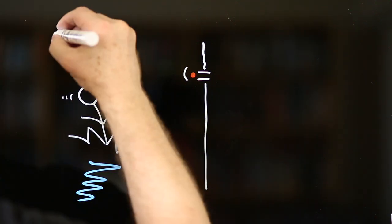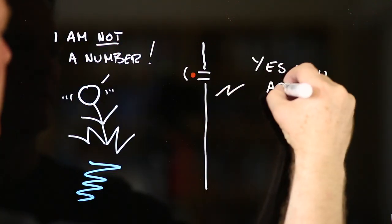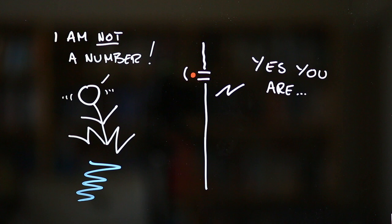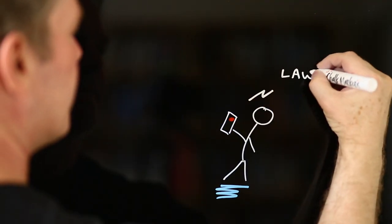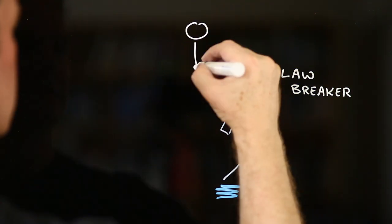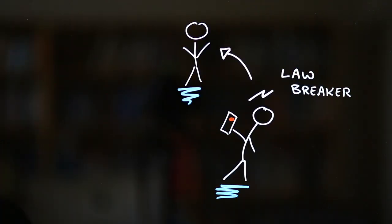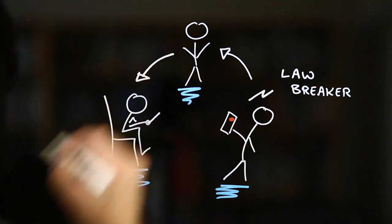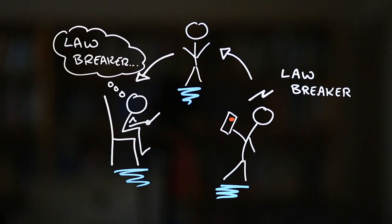But what happens when bias becomes a feature rather than a flaw? Imagine for instance an app that claims to be able to tell if you're lying or you've committed a crime, or that you might commit one, just by scanning your face. Now imagine that this app gets things wrong or it reflects the biases of the people who created it, so that if they think you look like a liar or a lawbreaker, this is what the app confirms.